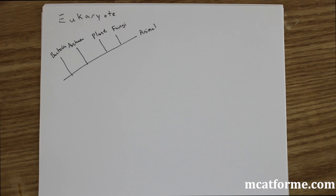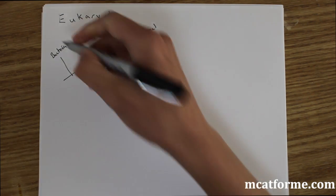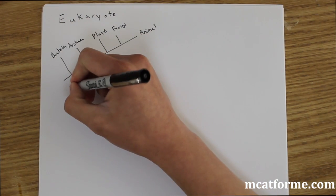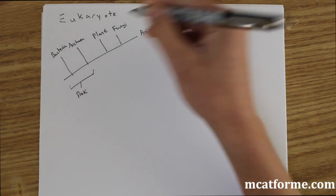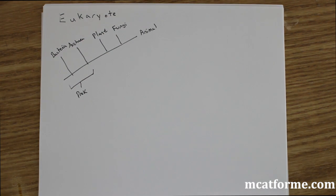Today we're going to be doing a lecture on eukaryotic cells. The first thing we're going to look at is the tree of life, a very basic tree of life. We see bacteria and archaea are from the prokaryotes, and plant, fungi, and animals are from eukaryotes.